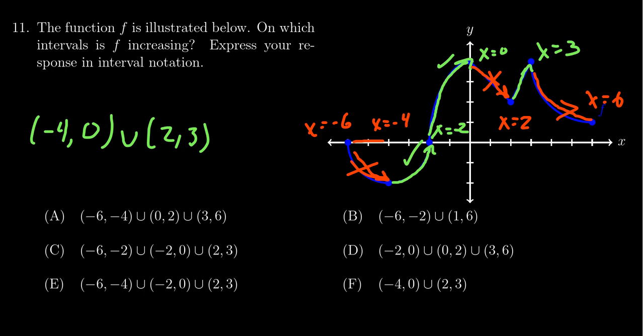So it was decreasing from negative 6 to negative 4, from 0 to 2, and from 3 to 6. We don't want those. We want where it was increasing. So that happened from negative 4 to 0, and from 2 to 3. And it was increasing nowhere else.